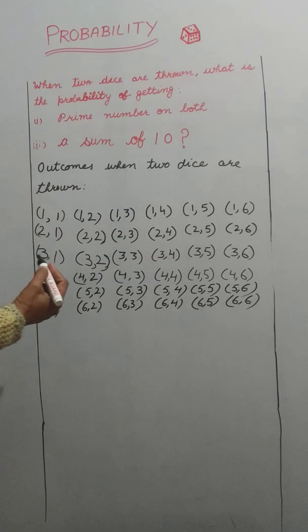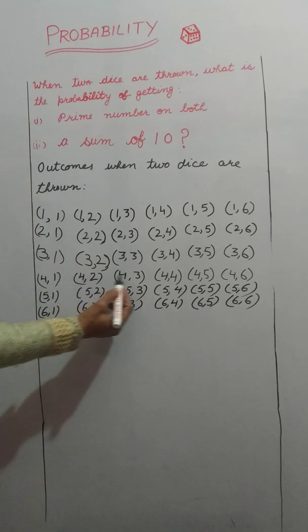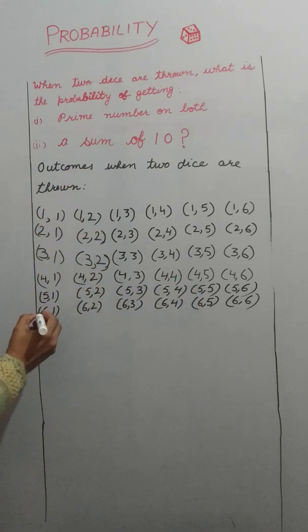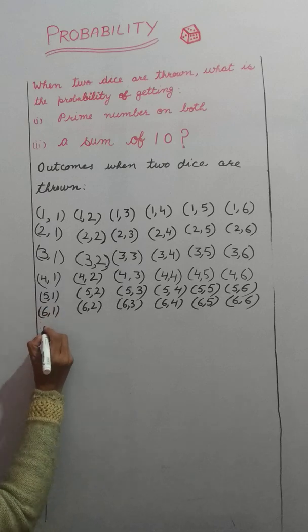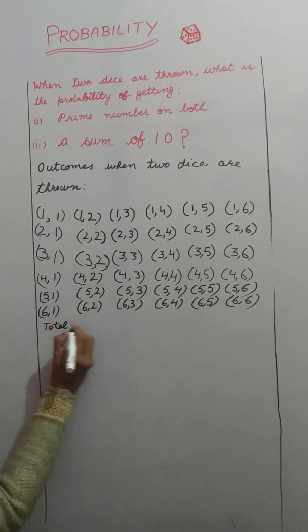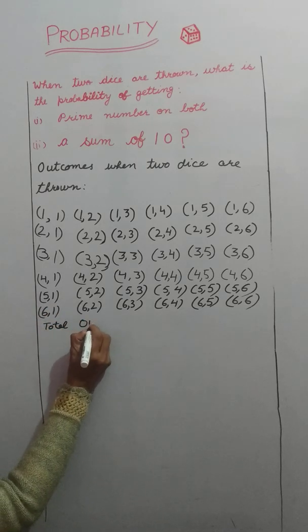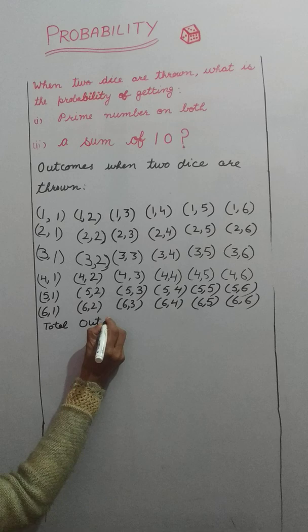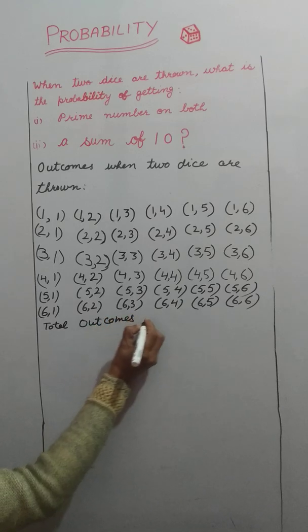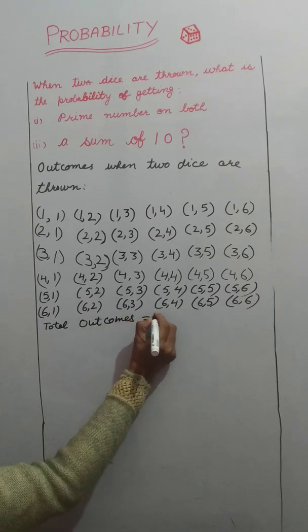In this way we can find out all the outcomes. The total number of outcomes when two dice are thrown is equal to 36.